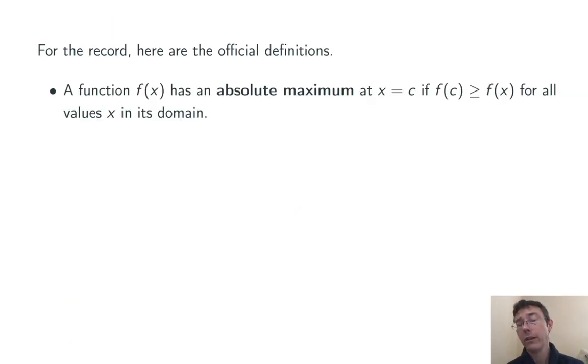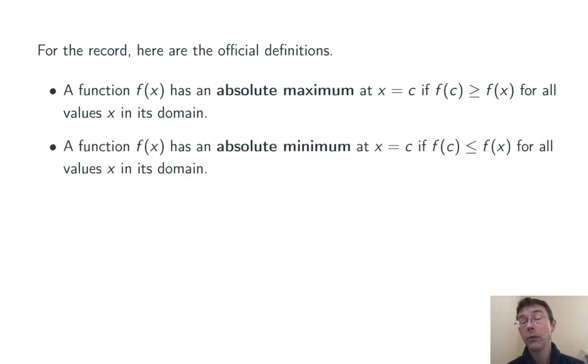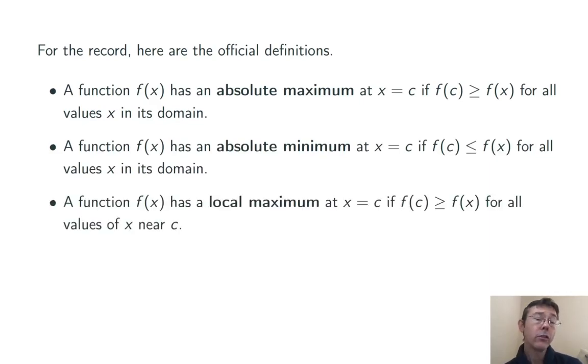So here are the official definitions. We'll move through them quickly because they don't get used too much in Calculus 1. A function has an absolute maximum at x equals c if f(c) is greater than or equal to f(x) for all values x in the domain. Similarly, for an absolute minimum, we just flip that inequality around. A function has a local maximum at x equals c if f(c) is greater than or equal to f(x) for all values of x nearby x of c, so not necessarily for all values x in the domain.